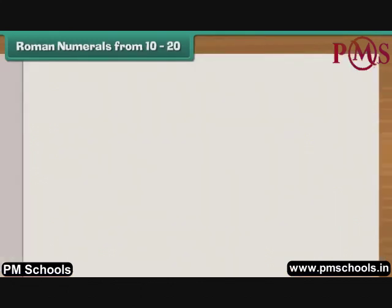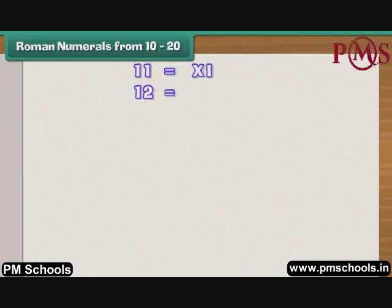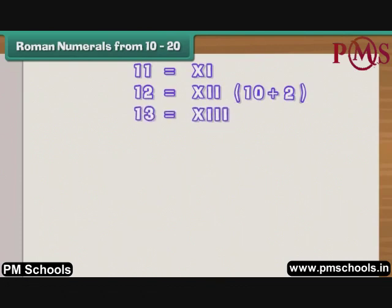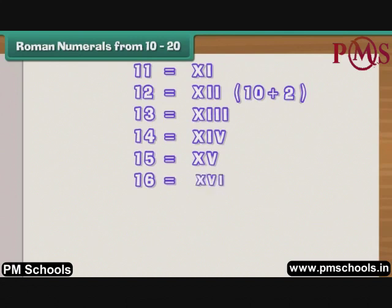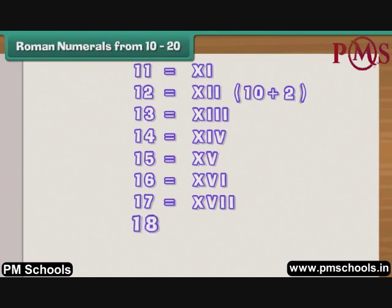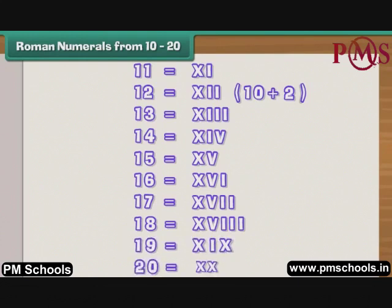Roman numerals from 10 to 20. 11 is 10 plus 1, so it is written as XI, meaning 10 plus 1. Number 12 is written as XII, meaning 10 plus 2. Similarly, 13 is XIII, 14 is XIV, 15 is XV, 16 is XVI, 17 is XVII, 18 is XVIII, 19 is XIX, and 20 is XX.